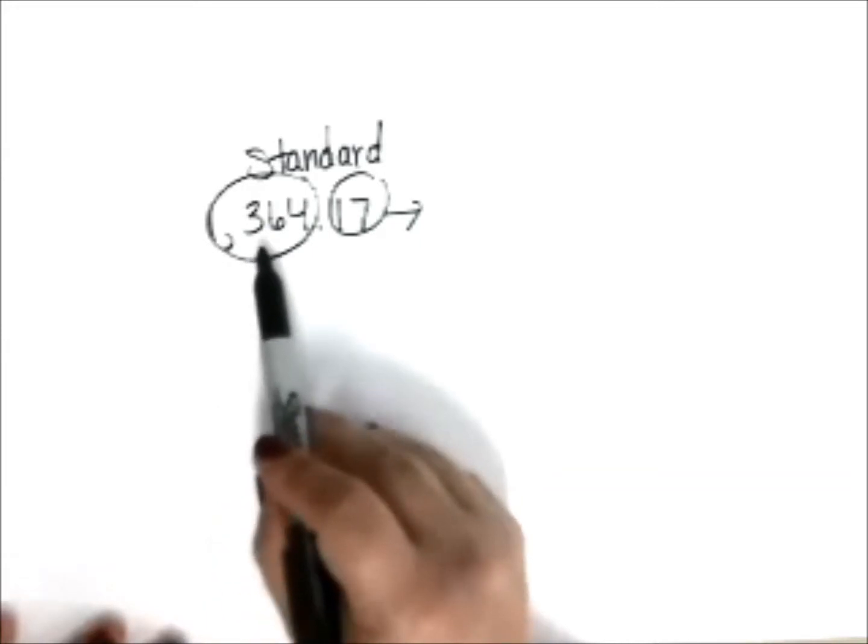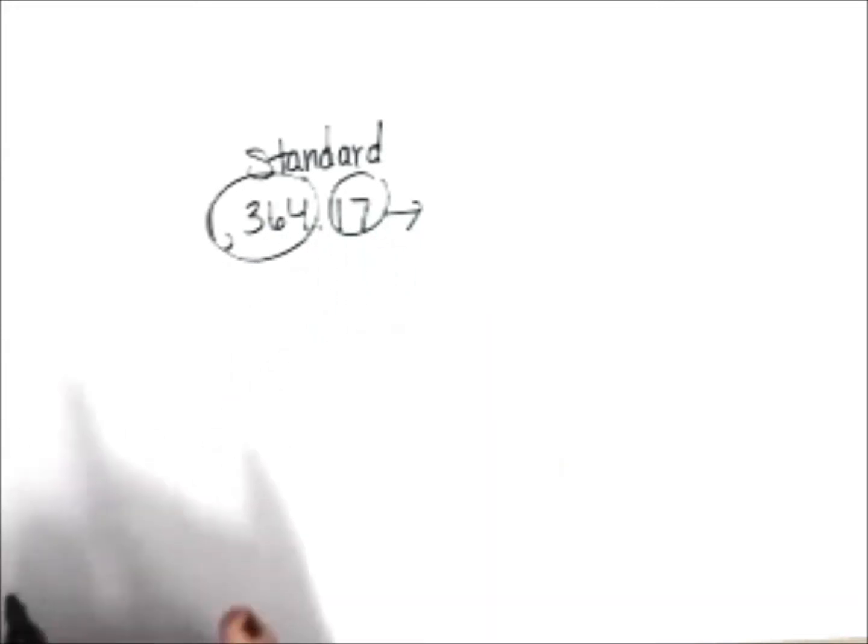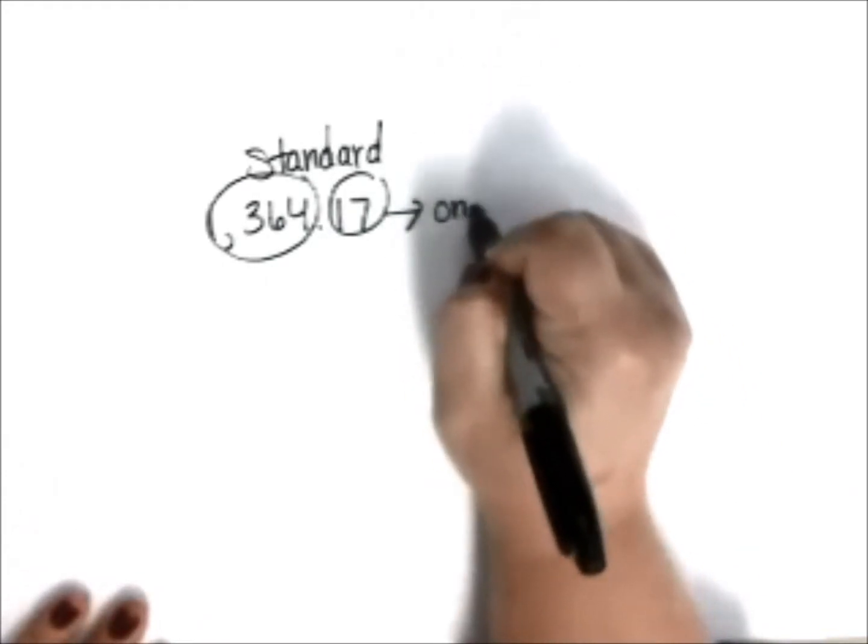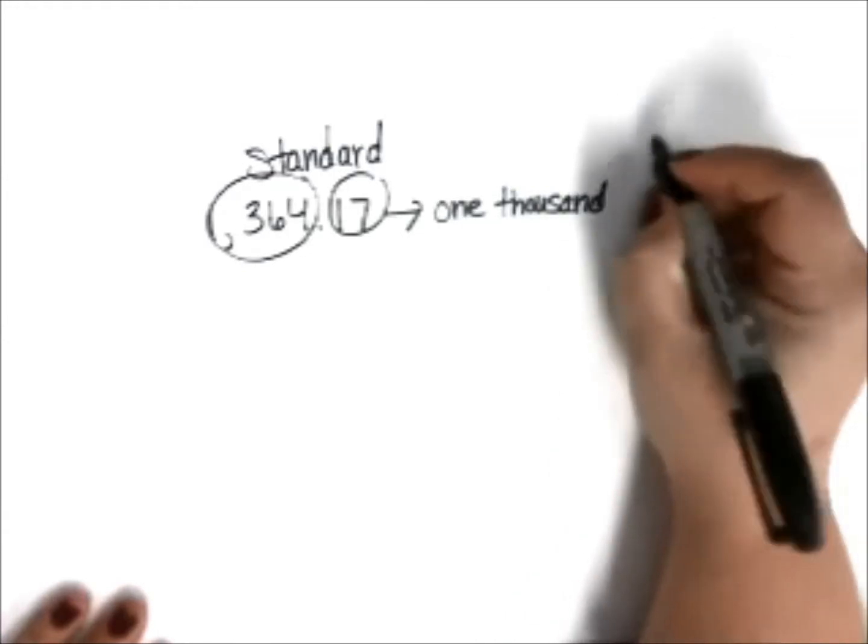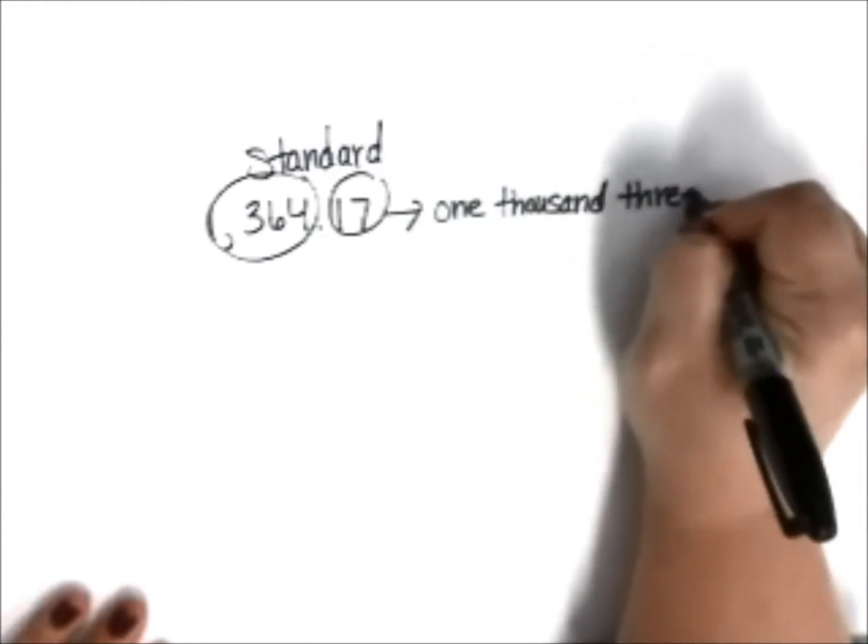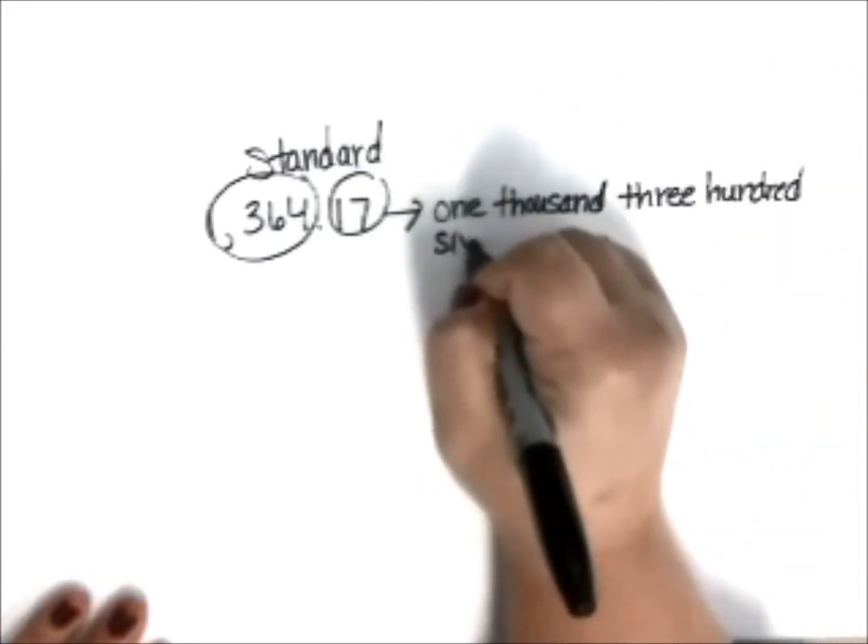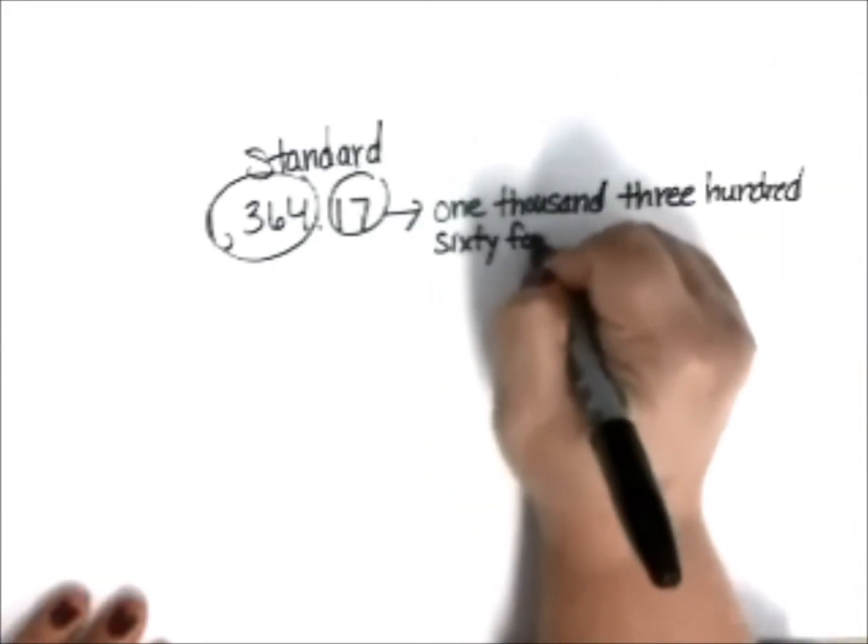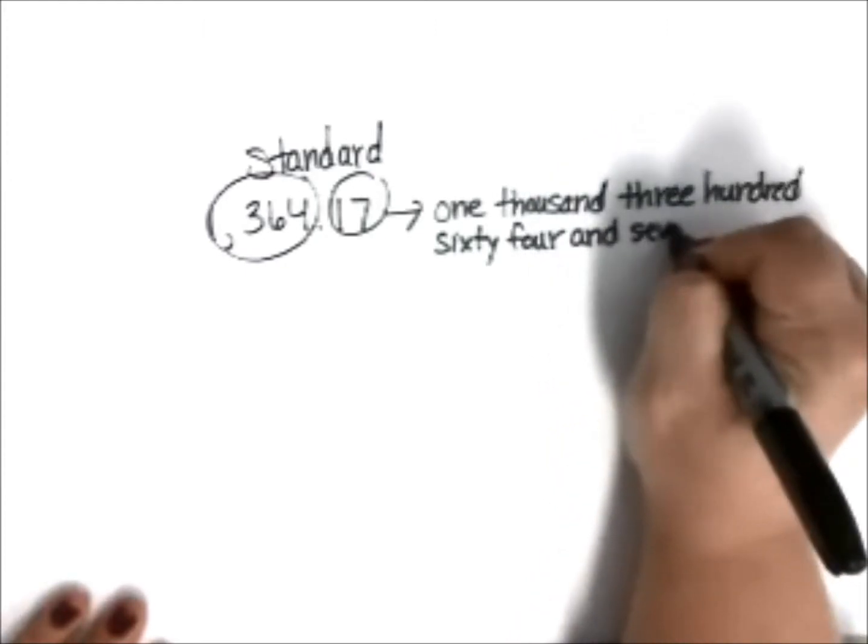This says 1,364 and 17 hundredths. If I can say it, I can write it. So here I go. 1,364 and 17 hundredths.